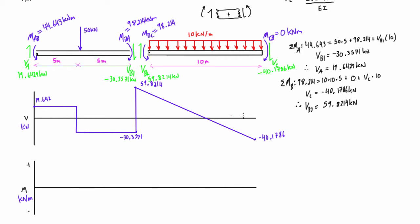We also want the distances on the diagram, which we can find with similar triangles. If we do 100 over 10, that equals 59.8214 over x. The big triangle has height 100 and base 10; we nest the smaller triangle in with height 59.82, and its base is x. That gives us x = 5.98214 meters, and the remaining base is 4.01786 meters. The other two bases in the first span are both 5 meters.